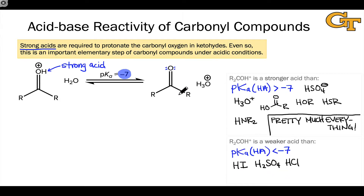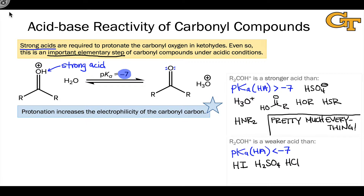So if we want to protonate a neutral carbonyl group — run this reaction backwards — we need to use one of these strong acids. Despite the strong acidity of the protonated carbonyl, this elementary step of protonation of a carbonyl compound can be important in the context of reactions under acidic conditions. The reason it's an important elementary step is that protonation increases the strength of the carbonyl group as an electrophile, specifically at the carbonyl carbon.